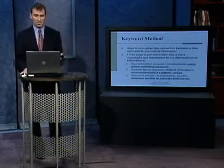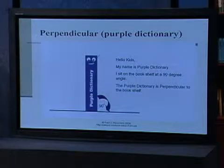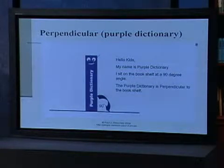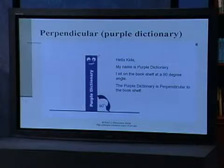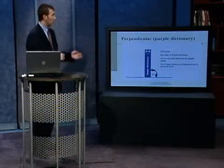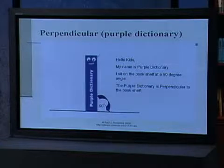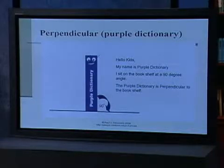It is probably best illustrated through examples. For the term perpendicular, I've matched that with the phrase 'purple dictionary' — notice they sound similar. Purple dictionary is going to be familiar to most kids at most grade levels. The definition I'm emphasizing here is that it sits at a 90 degree angle. There's the similar sounding word, a picture, and a little phrase: 'Hello, kids. My name is purple dictionary. I sit on the bookshelf at a 90 degree angle. The purple dictionary is perpendicular to the bookshelf.' That sentence ties everything together for the student, building links and connections.